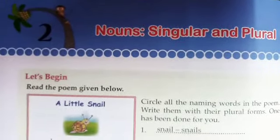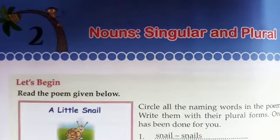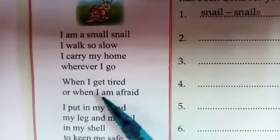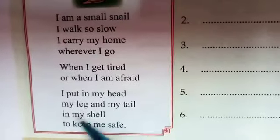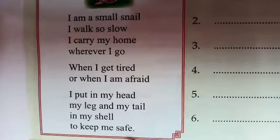Good morning children. Now I am teaching you English grammar chapter 2. See, one small poem is there. I am a small snail. I walk too slow. I carry my home wherever I go. When I get tired or when I am afraid, I put my head, my leg and my tail in my shell to keep me safe. Now here is the question.